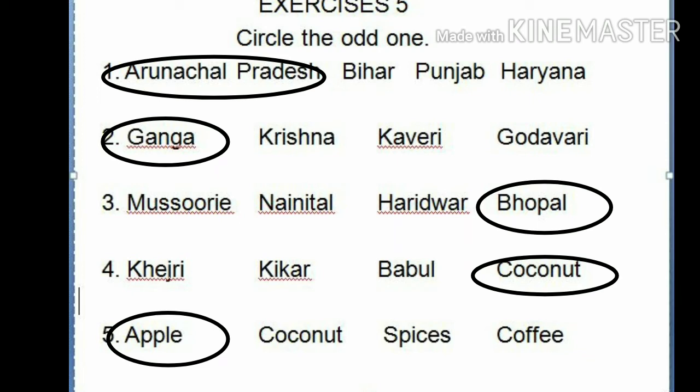Number 4: Khejri, Kekar, Babul, Coconut. Coconut is the odd one because Khejri, Kekar, and Babul grow in desert areas, while coconut grows in coastal plains.